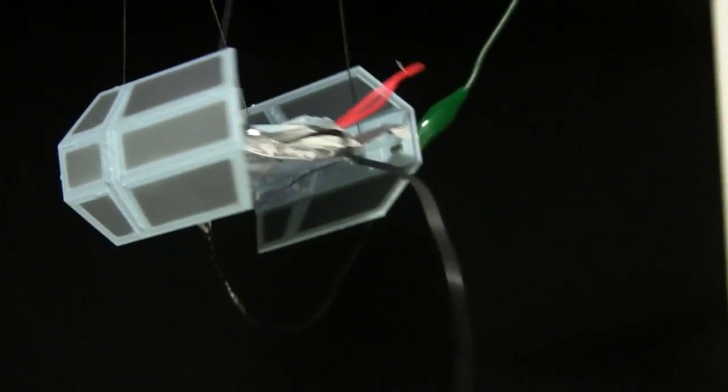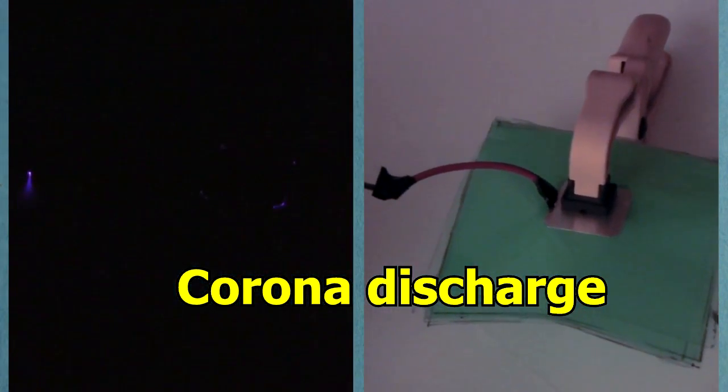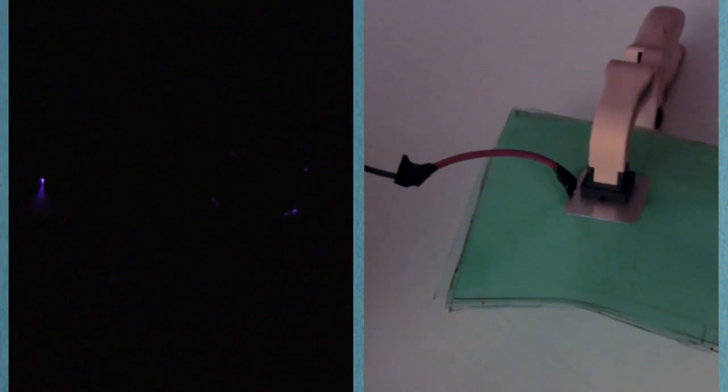Here we have a model of the Star Wars TIE fighter with high voltage electrodes spaced apart. The gas discharge is flowing between the two electrodes.